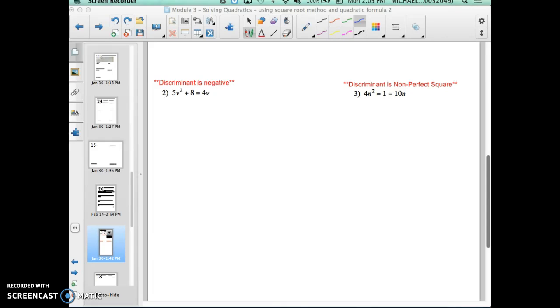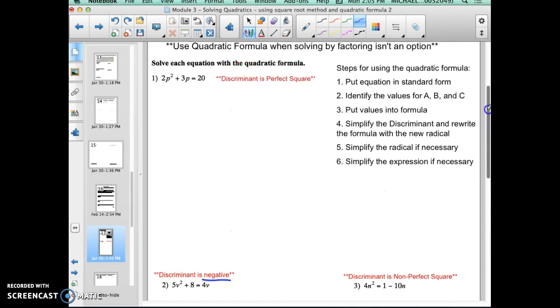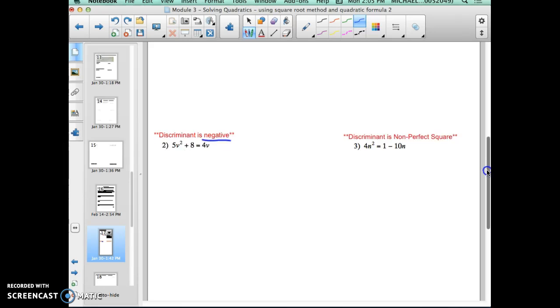In this example, I'm going to use the quadratic formula to solve a quadratic equation where the discriminant is going to be a non-perfect square. We've used it in a previous video where the discriminant is negative in number two, and where the discriminant is a perfect square in number one. So if you don't recall watching those videos, please go back and watch those videos, because you will see all three examples on a test or a quiz.